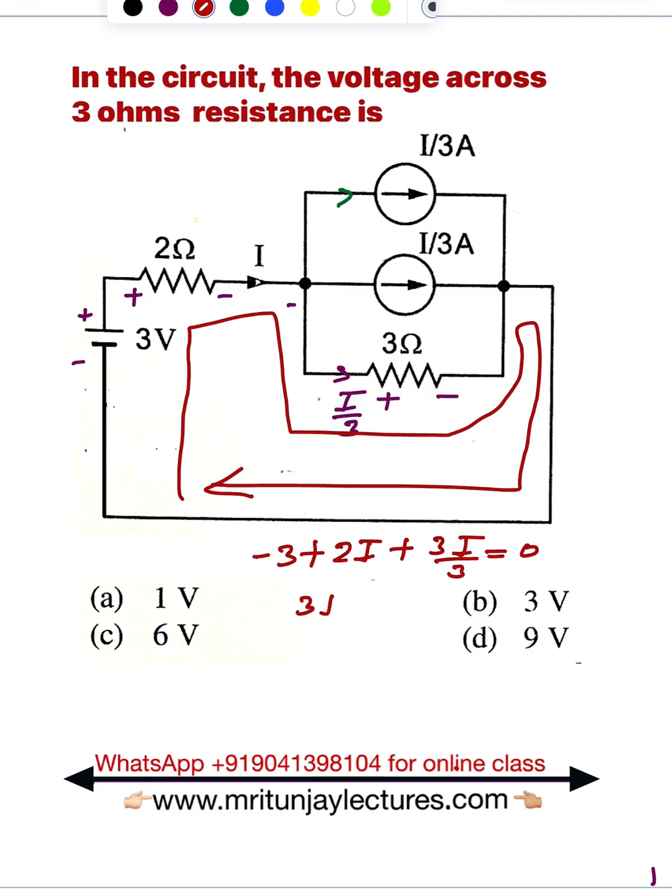So 3I equals 3, which means I equals 1 ampere. So what about voltage? If we suppose that is Vₓ, so Vₓ equals 3 times I/3.